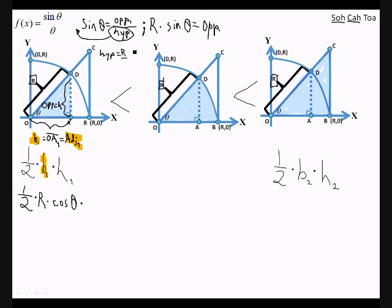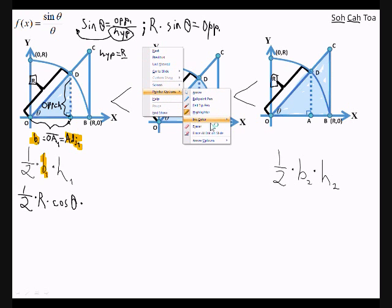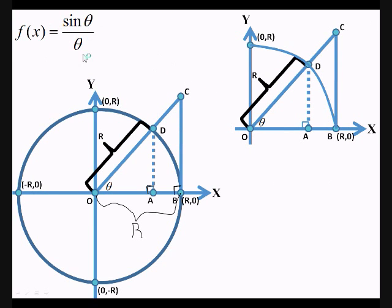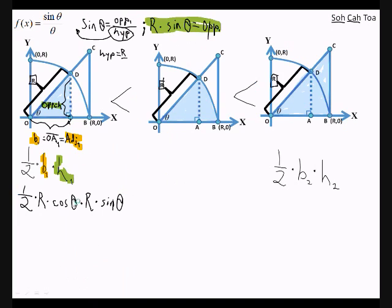So we can basically now plug this in. The opposite is equal to the height of 1, and this is height 1. So now we can plug it in here — R times sine theta. Now we have the basic area of our first triangle, using theta as a factor because we will be calculating theta as it goes to 0. So theta is an important factor to have in here.